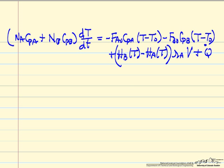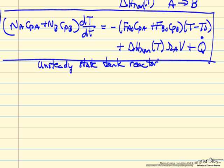Combining terms, we have the change in temperature with time on the left side, and on the right side we have terms due to flow in, the delta H of reaction for A goes to B (enthalpy of products minus enthalpy of reactants evaluated at temperature T), and Q-dot. In general the heat of reaction is a function of temperature. This gives us the general energy balance for an unsteady state tank reactor, which we can then simplify for various reactor types. For startup of a CSTR we'd use this complete equation; for a semi-batch reactor we use the complete equation or simplify depending on whether there are flow terms in or out.